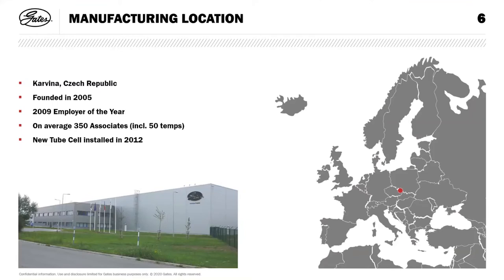The tubes we produce in Europe are all made in a place called Carvina in the Czech Republic, which is right on the Polish border. We have on average 350 associates, and a new tube cell was installed in 2012. Gates has been producing tubes since the 1980s in the UK, then transferred to Spain in the late 90s. We have a long experience with tubing and many tube manufacturing locations throughout the world.